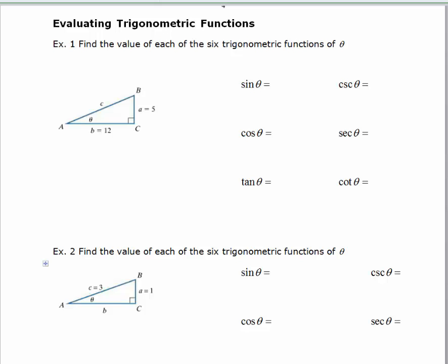Example 1 asks us to find the 6 trigonometric functions of theta. In order to do this, we're going to need to find the value of the missing side first. Once we do that, we can use the definitions of each of the trig functions to evaluate.